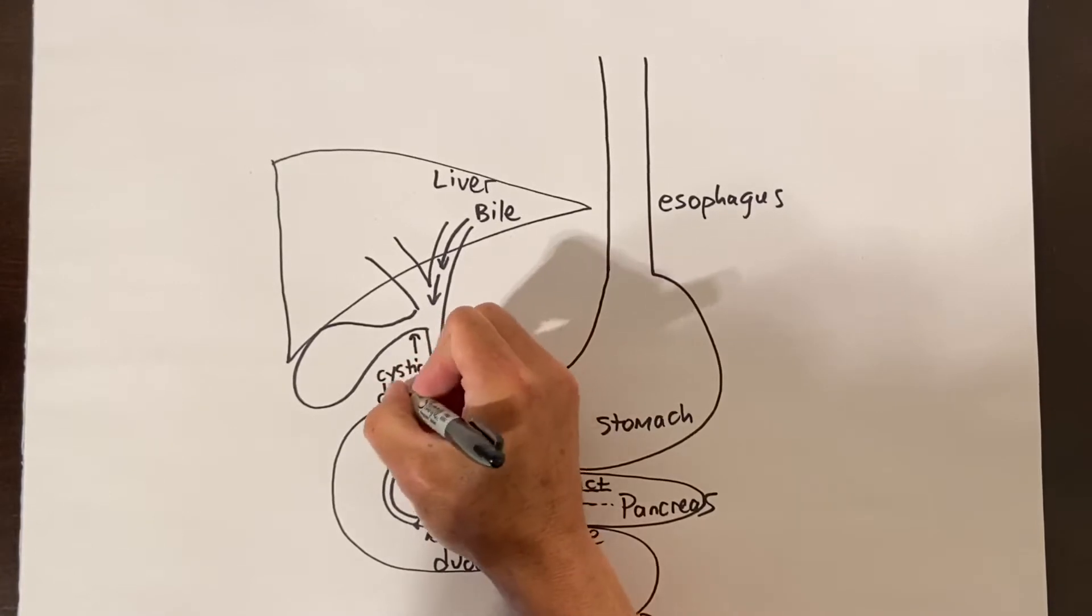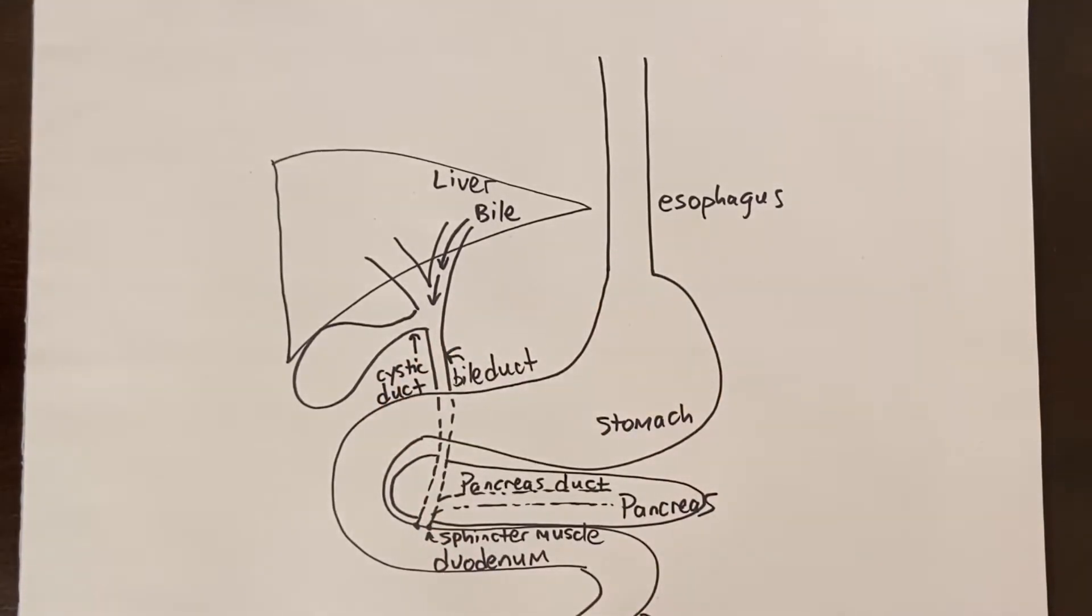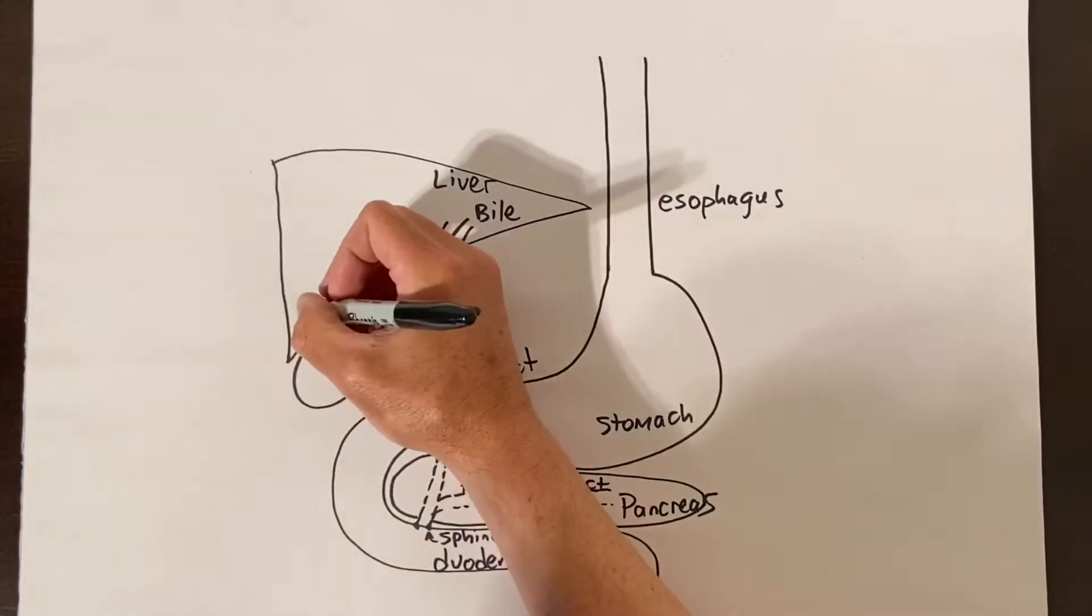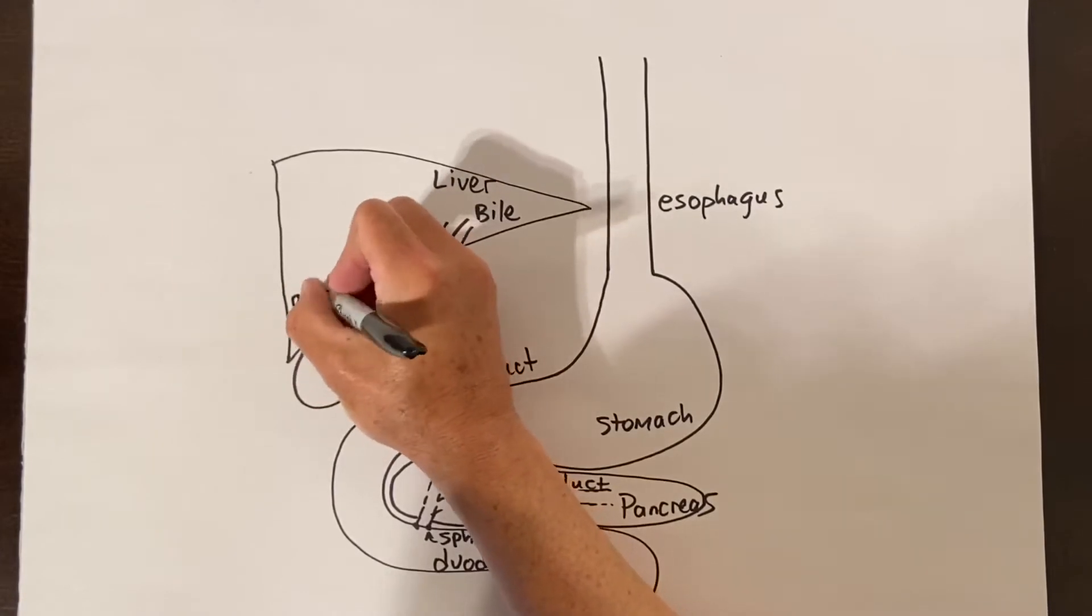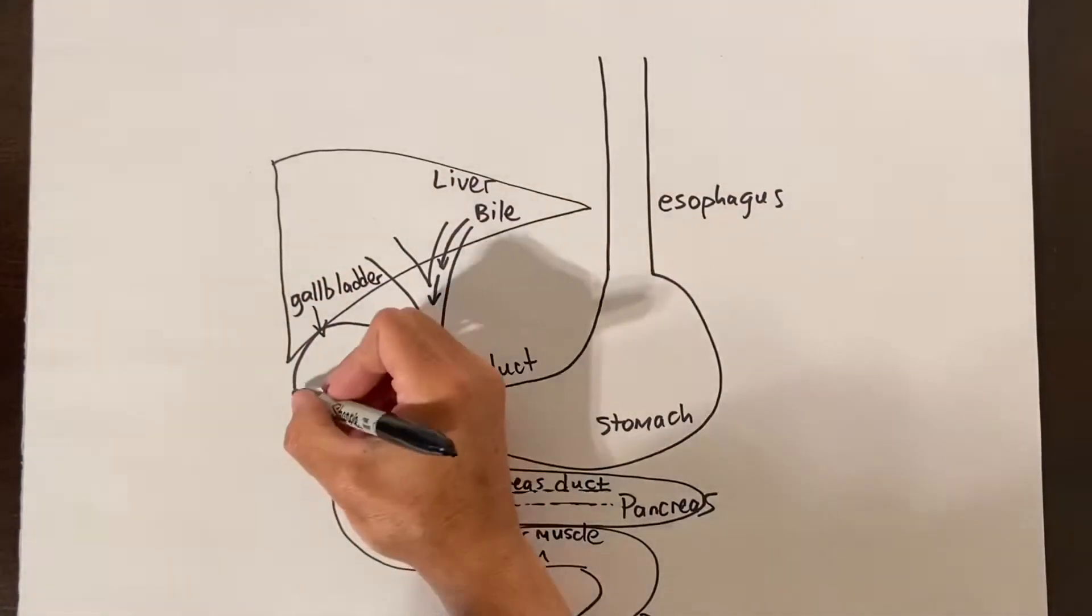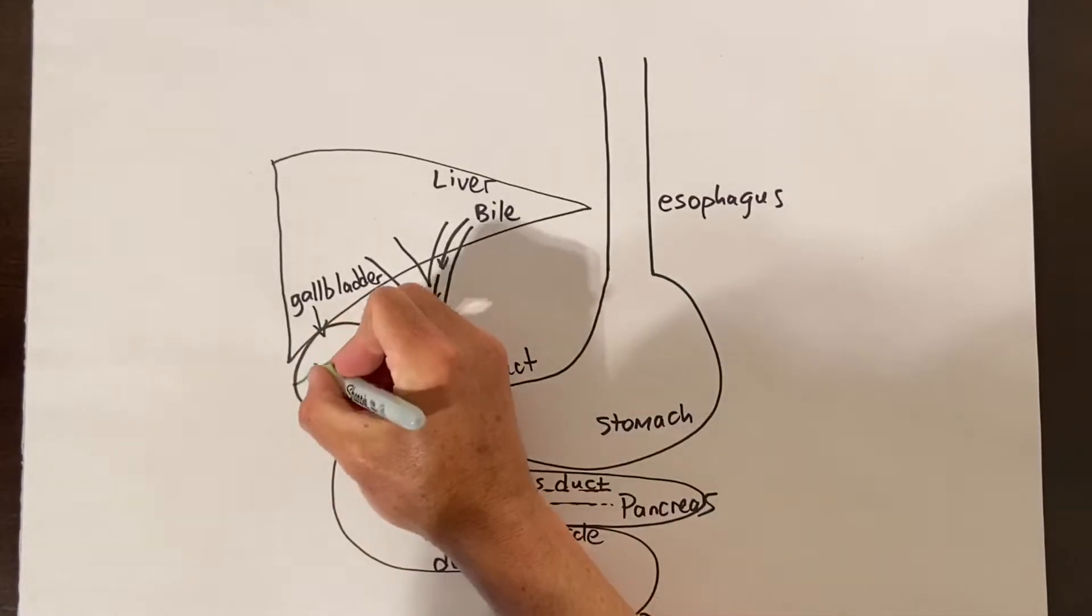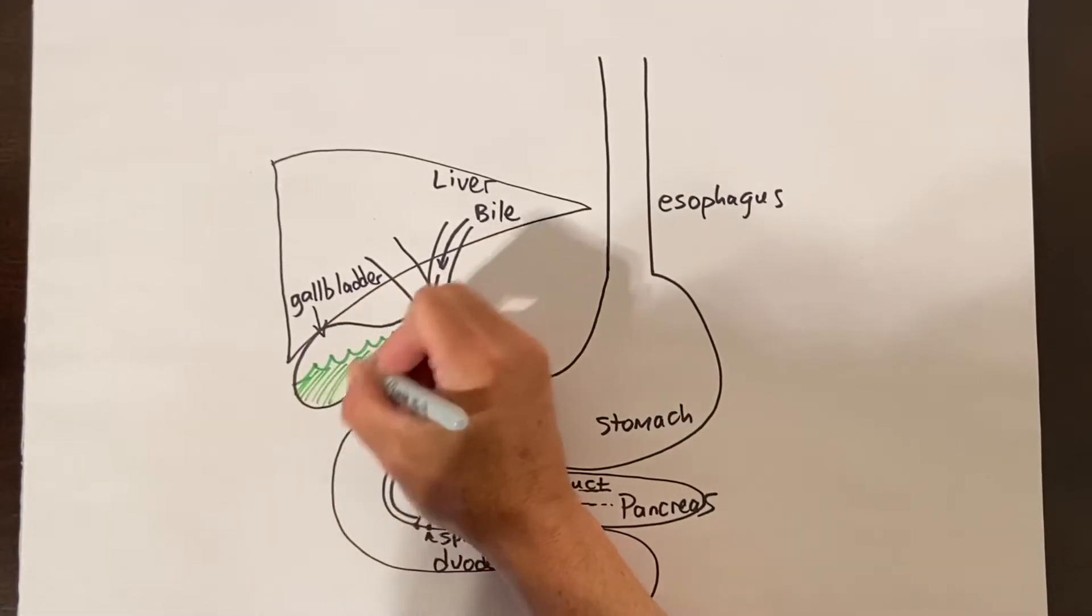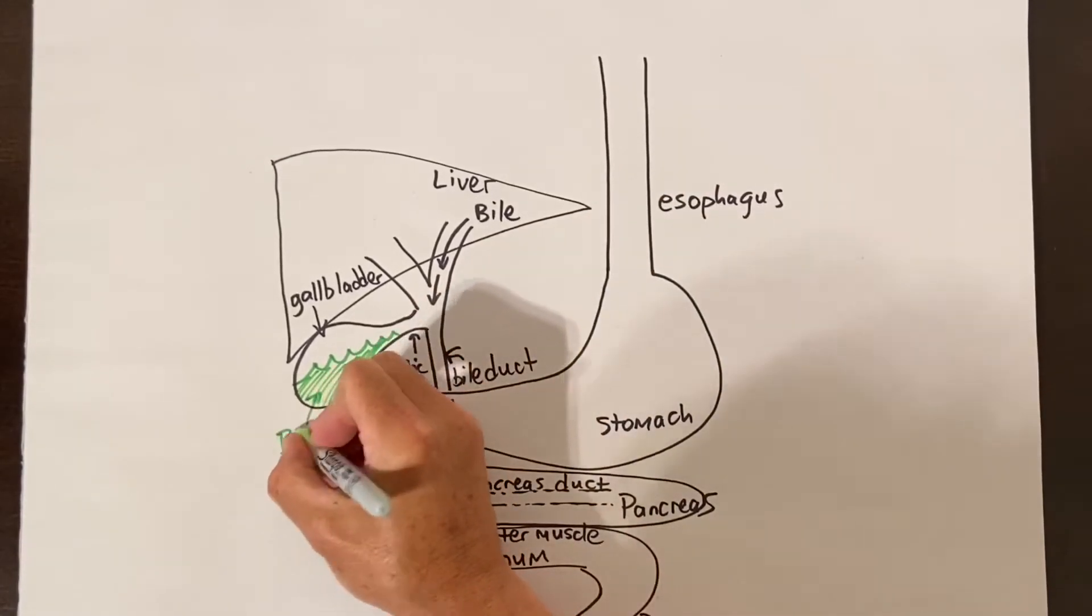The gallbladder is attached to the main bile drainage tube by a shorter smaller tube called the cystic duct. The gallbladder is loosely stuck under the liver. The function of the gallbladder is to store bile. When you eat, hormone stimulation causes the gallbladder to contract and squeeze extra bile into the intestine to help you digest your meal.